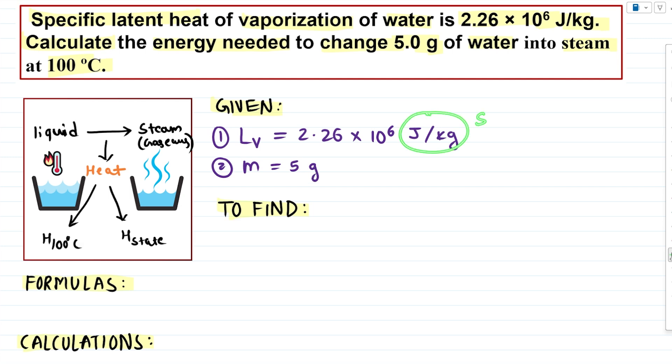Our latent heat is in SI unit and our mass is in grams, which is not an SI unit. So let's convert this value into its SI unit. So the SI unit of gram is kilogram. So 1 gram is 10 raised to minus 3 kilograms. So 5 grams must be 5 into 10 raised to minus 3 kilograms. Okay, this was our mass of water.